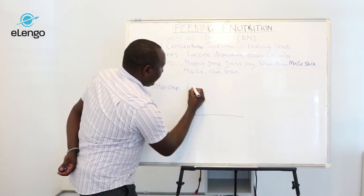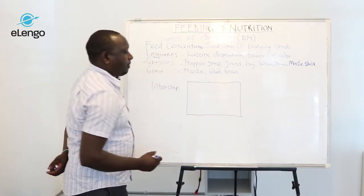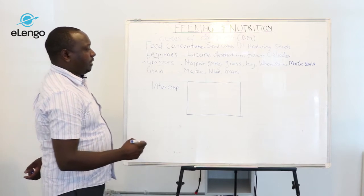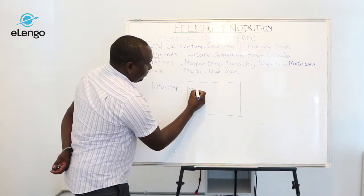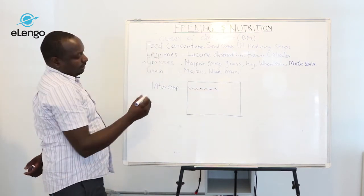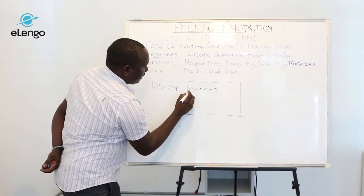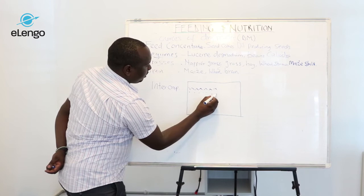You can have your grass field—say you have napier or brachiaria. Most farmers tend to plant desmodium in between.